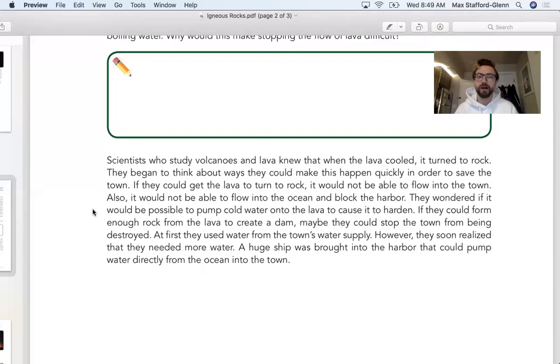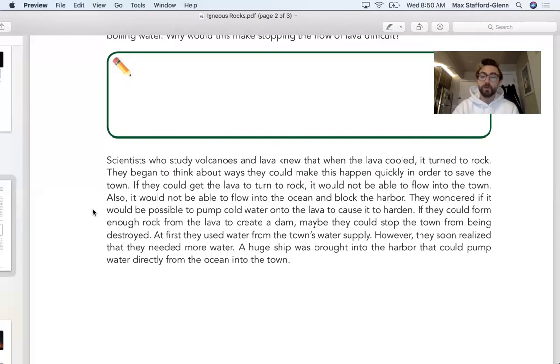They wondered if it would be possible to pump cold water onto the lava to cause it to harden. If they could form enough rock from the lava to create a dam, maybe they could stop the town from being destroyed. At first they used water from the town's water supply. However, they soon realized that they needed more water. A huge ship was brought into the harbor that could pump water directly from the ocean into the town.